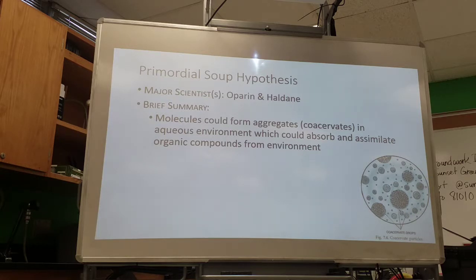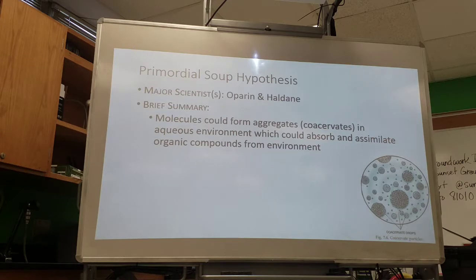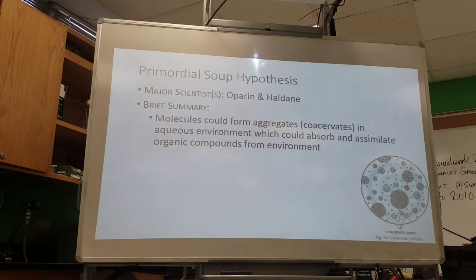Oparin and Haldane were two of the scientists who put forth the primordial soup hypothesis — that there was a bunch of stuff floating in the primordial oceans. With energy from either ultraviolet radiation or lightning, these things reacted and were able to form organic molecules. Those organic molecules were then able to aggregate and form coacervates, which are basically like protocell membranes. As they acquired different organic molecules, they could take on more and more properties of life.